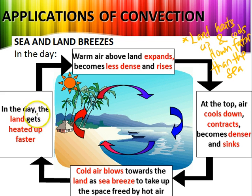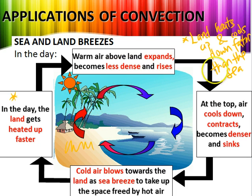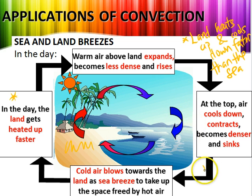In the day, the land gets heated up faster. The warm air above the land will get heated up, it will expand, becomes less dense and it will rise. So as it reaches the top, the air will start to cool down, it will contract, become denser and it will sink. This sets up a convection current.